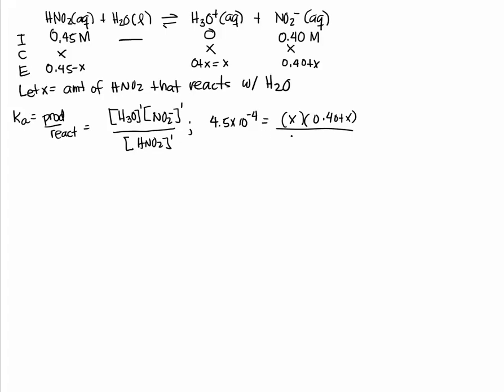Okay, we're doing weak acid, so X is a lot smaller than 0.45 and X is a lot smaller than 0.40, so we can disregard those. So then our expression becomes simplified.